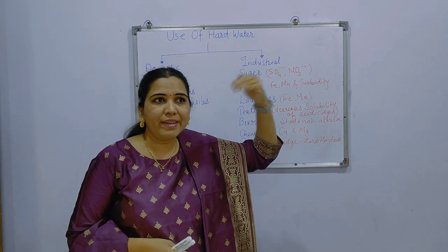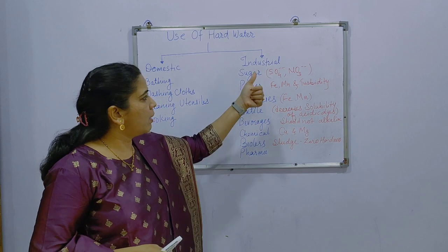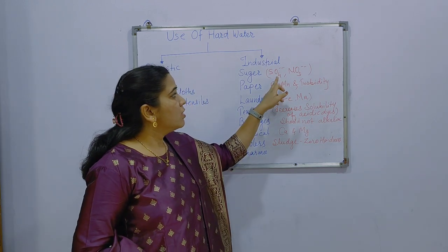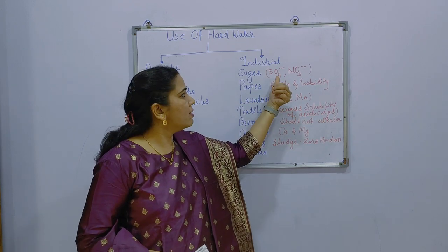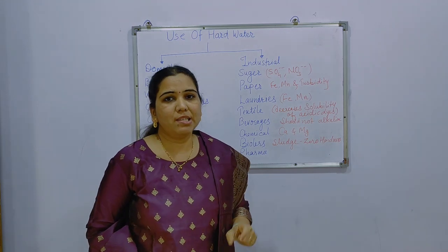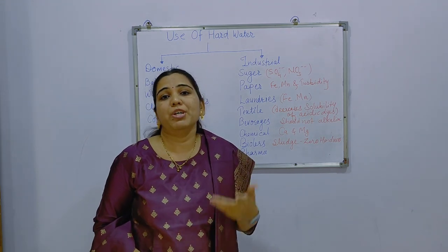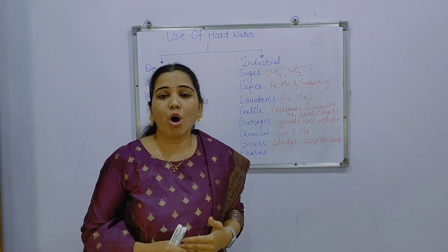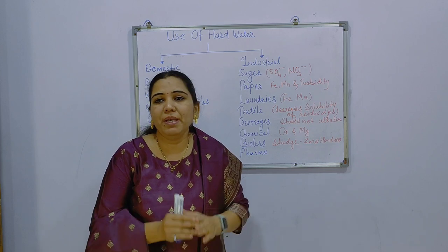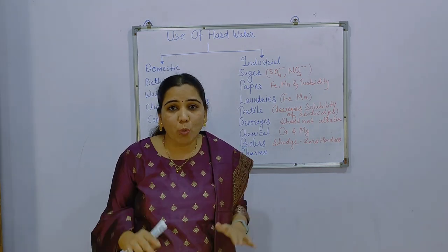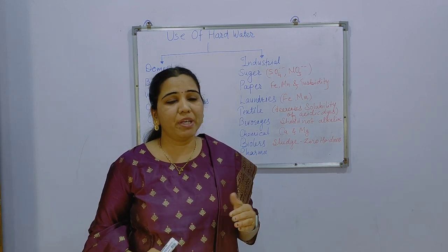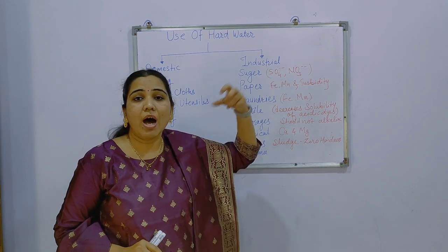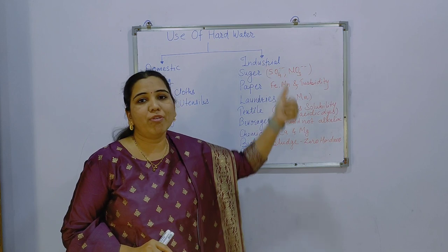On the industrial level, take the sugar industry as an example, where production of sugar is continuously going on. Salts containing sulfates and nitrates have ions like SO4²⁻ and NO3²⁻. Whenever these ions are present in water, they interfere during the formation of sugar, giving the sugar deliquescent or hygroscopic properties. When that sugar is placed in the open, it absorbs atmospheric moisture and becomes a somewhat molten mass. That's why we cannot use hard water in the sugar industry.